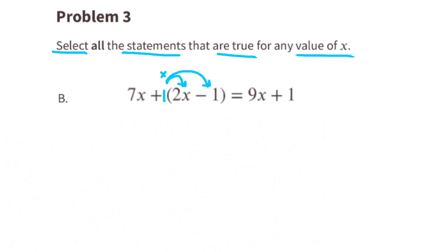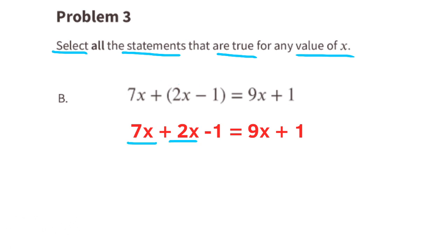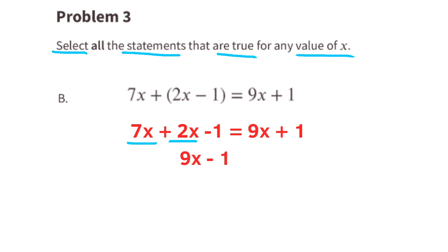Option B: a positive times a positive is a positive, and a positive times a negative is a negative. We can rewrite this as 7x plus 2x minus 1 equals 9x plus 1. Combining like terms on the left side, 7x plus 2x is 9x, so the left side reads 9x minus 1. Since 9x minus 1 is not the same as 9x plus 1, this statement is false.